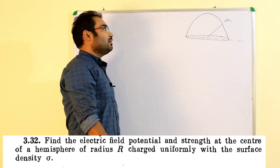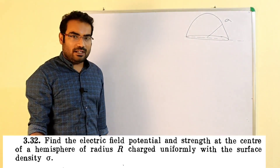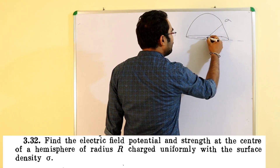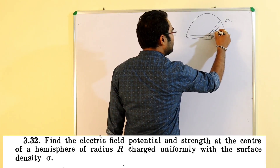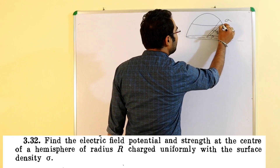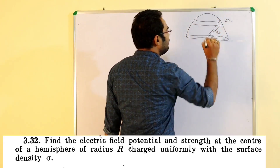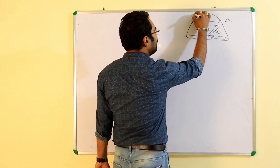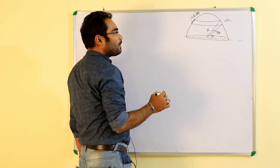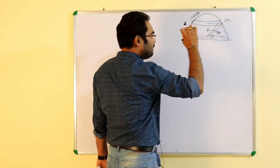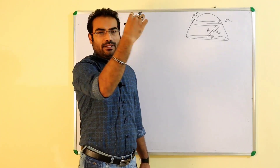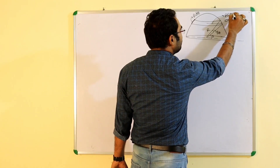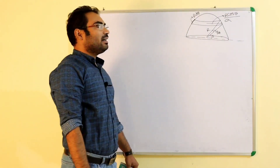Jab is case me electric field calculate karna hai, to yahan se theta angle jake ek d-theta width ka ek strip consider kar lete hain. Yeh humne ek strip consider kar liya. Iska radius R hai, to yeh jo length hai, that is equals to R dθ. Aur is ring ka jo strip consider kiya hua hai, uska radius R cos θ ke barabar aa jayega.